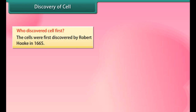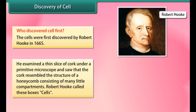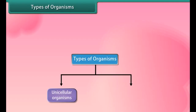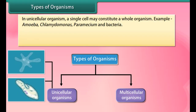Who discovered the cell first? Cells were first discovered by Robert Hooke in 1665. He examined a thin slice of cork under a primitive microscope and saw that the cork resembled the structure of a honeycomb consisting of many little compartments. Robert Hooke called these boxes cells.